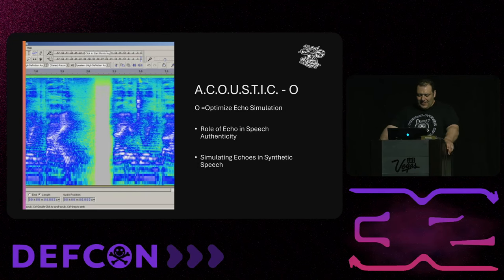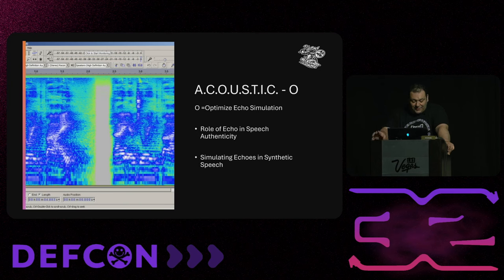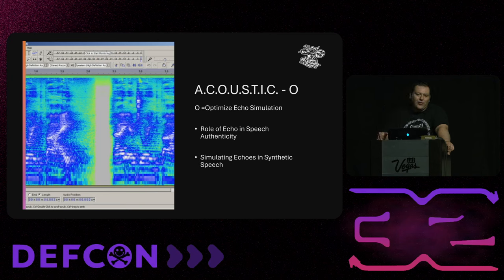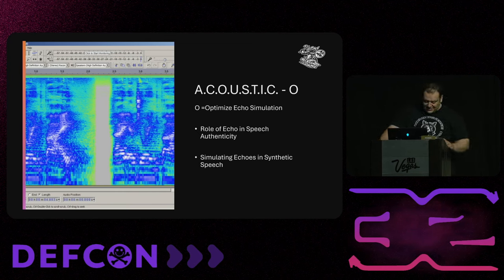Optimizing echo simulation is crucial for making synthetic speech more convincing and realistic. Echoes naturally occur when speech is recorded, adding depth and context by reflecting off surfaces. These reflections help listeners perceive space and authenticity, which is often missing in synthetic voice generated by spoofing algorithms. In genuine recordings, echoes carry subtle clues about the recording's space, size, and nature, varying in amplitude and delay based on surface distance and characteristics. To enhance the realism of spoof speech, simulating natural echo patterns involves introducing slight time-delayed copies of the original audio with progressively lower amplitudes, mimicking how sound waves bounce and decay in real-world environments, challenging voice verification systems that detect the absence of natural reflections.